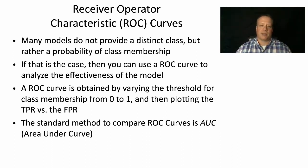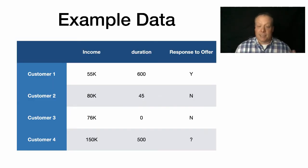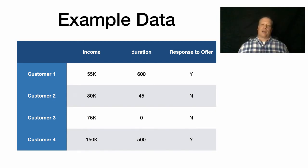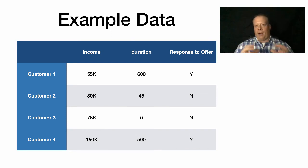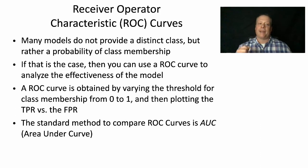A final measure involves models that don't provide a distinct class label but rather a probability of class membership. Instead of yes/no, the model output might be '50% chance they'll respond to the offer' or '75% chance.' You can then build a classifier by setting a threshold — for example, any probability above 60% gets labeled 'yes' — and vary that threshold up and down to find the best fit. Receiver Operating Characteristic (ROC) curves are a way of visualizing this. An ROC curve is obtained by varying the threshold for class membership from zero to one and plotting the true positive rate versus the false positive rate.